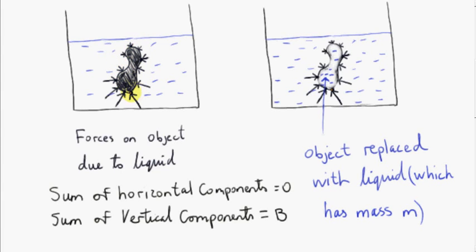Here we have an object that's immersed in a liquid. The object could be sinking to the bottom of the container or floating up to the top, but we take a snapshot of the object at a particular instant in time. We are going to consider the forces on the object due to the liquid.